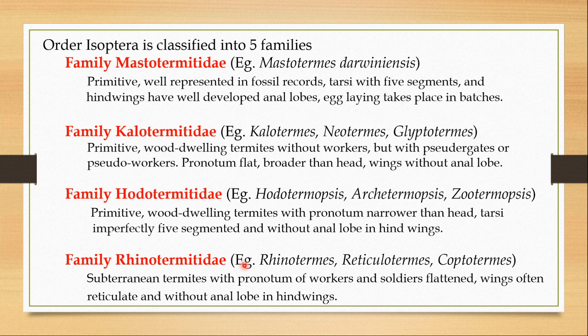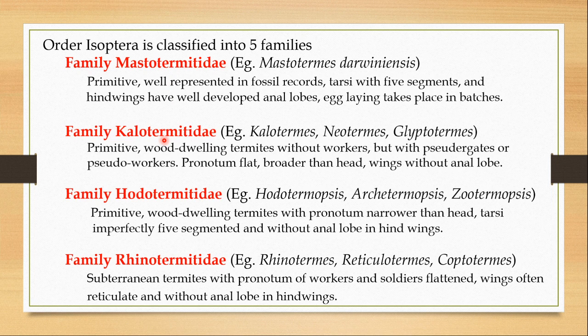In family Rhinotermitidae we have genera like Rhinotermes, Reticulotermes, Coptotermes, etc. These are all subterranean termites. Their pronotum in workers as well as in soldiers is flattened, wings are often reticulate, and these are also without an inner lobe in hind wings. So we have four families under the lower termites: Mastotermitidae, Kalotermitidae, Hodotermitidae and Rhinotermitidae. Kalotermitidae and Hodotermitidae are wood-dwelling and Rhinotermitidae is subterranean.